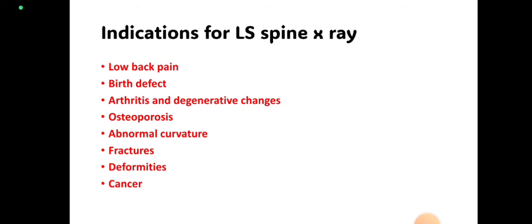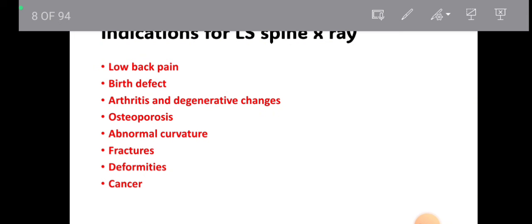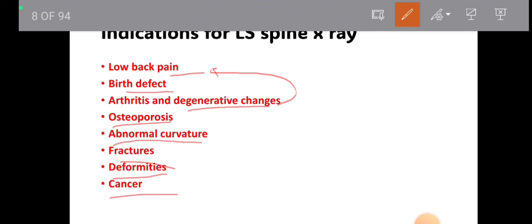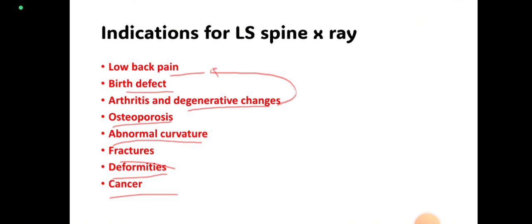Now, introduction to the lumbar spine x-ray. The indications for lumbar spine x-ray include: low back pain, which is the most common indication; birth defects; arthritis and degenerative changes; osteoporosis; abnormal curvature of the spine — that is scoliosis; fractures; deformities; and focal or localized cancer of the bone. X-rays are used for these indications.